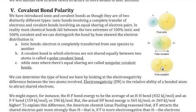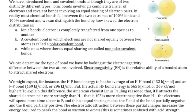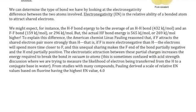The way we determine whether a covalent bond is polar or non-polar is by using electronegativity — the relative ability of a bonded atom to attract shared electrons. If two atoms are equally strong at attracting the shared electrons, you get a non-polar covalent bond; if they are unequal, you get a polar bond.